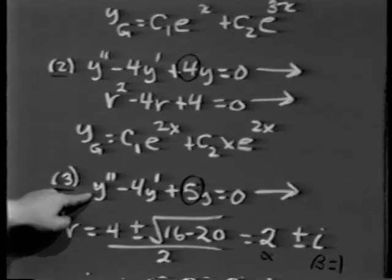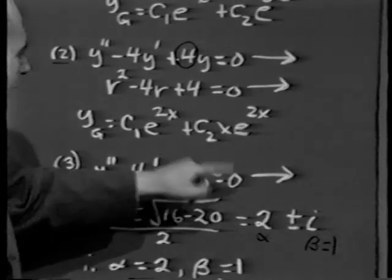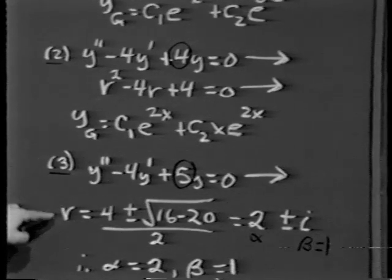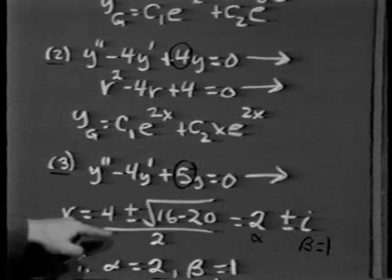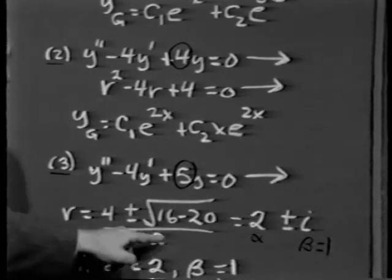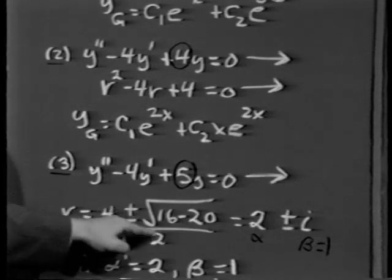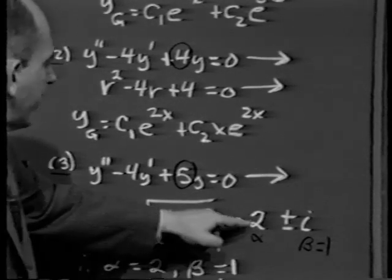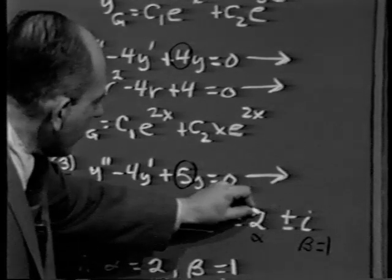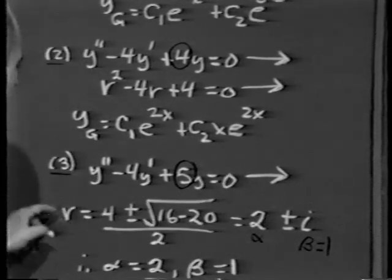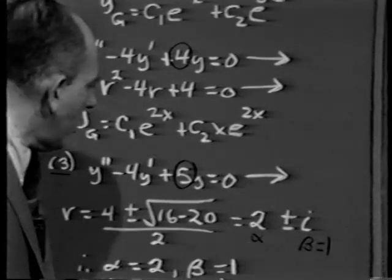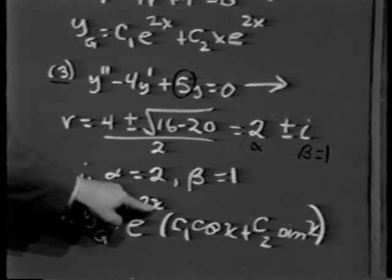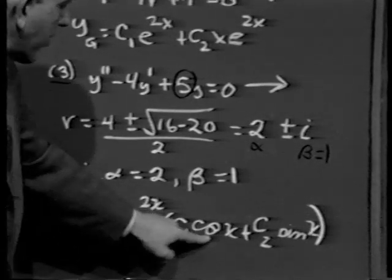The third case: y double prime minus 4y prime plus 5y equals 0 leads to r squared minus 4r plus 5 equals 0. By the quadratic formula, r equals 4 plus or minus the square root of 16 minus 20, all over 2. The square root of minus 4 is 2i, so r equals 2 plus or minus i. Alpha equals 2, beta equals 1, and the general solution is e to the 2x times c1 cosine x plus c2 sine x.